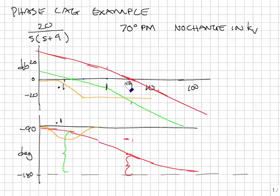The technique with a phase lag, at least in this case, is to put the lag back far enough so that we drop this curve down and force the crossover point to come back. If the crossover point moves back this direction, then we can increase the phase margin.